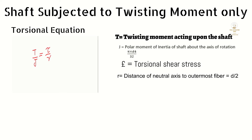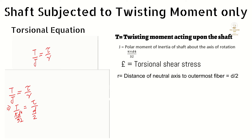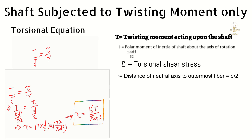By substituting the values of J and R into the torsional equation, we get T / (πD⁴/32) = τ / (D/2). By simplification, the shear stress τ = 16T / (π × D³).